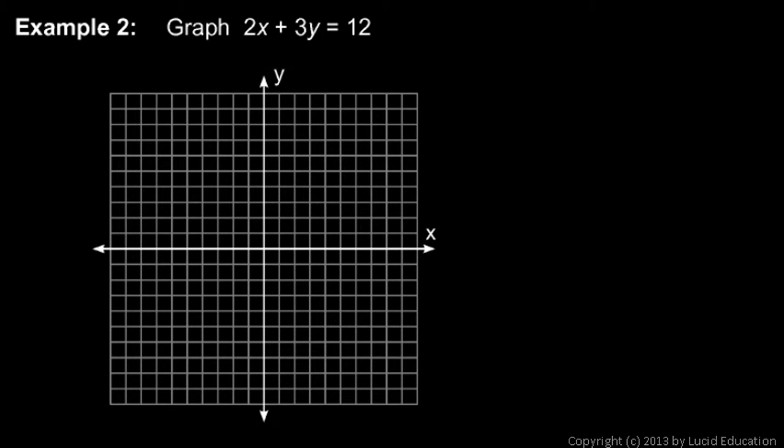Watch this: 2x plus 3y equals 12. Let x equals 0 and see what happens. If x is 0, then 2 times x is 0, so that's gone and we're just left with 3y equals 12.